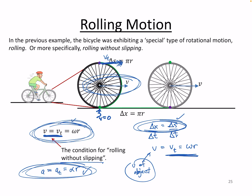But doesn't that mean — if the bottom contact point is moving at zero velocity and the center is moving at velocity v — then to have everything average out to just that value, because the whole object moves forward at v but part of it (the contact point) is stopped, the very top of the wheel actually has to be moving twice as fast as the center of the wheel. Weird.